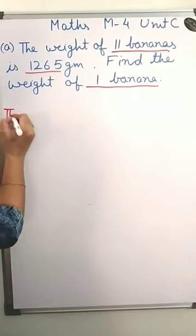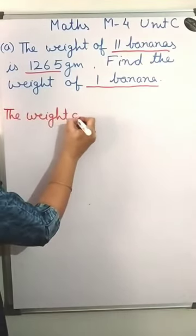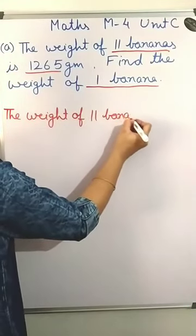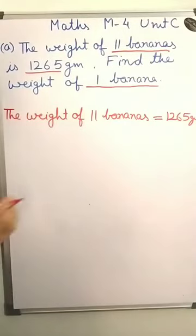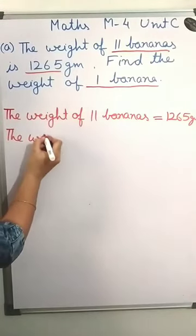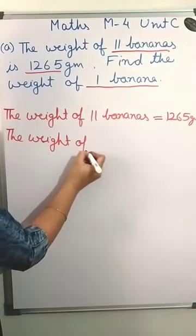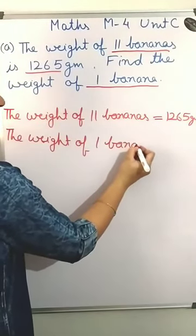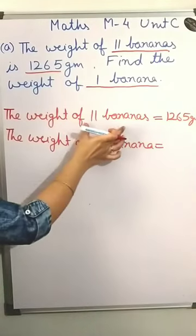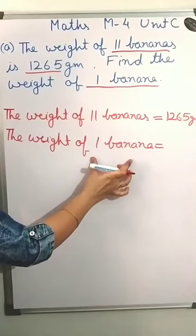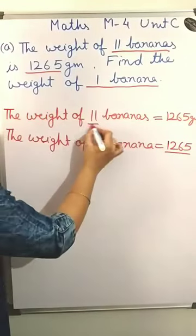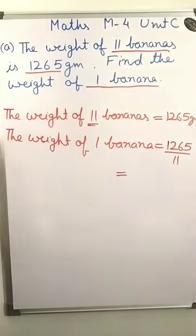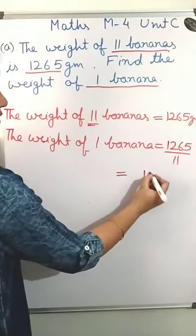So how do we find the weight of 1 banana? 11 bananas is equal to 1265 grams. Now the value of many bananas is given to you. You have to calculate the value of only 1 banana. Means many to 1 — so we divide. Divide by 11. And calculate the answer. The answer is 115 grams.